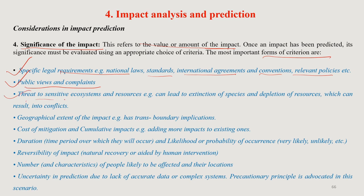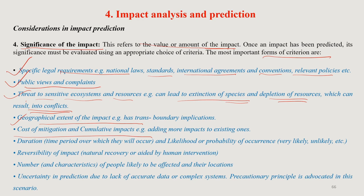Another criterion is threat to sensitive ecosystem resources — which can lead to extinction of species, depletion of resources, and sometimes conflict. Geographical extent of the impact with trans-boundary implications, cost of mitigation, cumulative impacts — where you add more impacts to the existing ones — duration and time period over which the impact will occur, and the probability of occurrence — very likely, likely, or unlikely — are all important considerations.